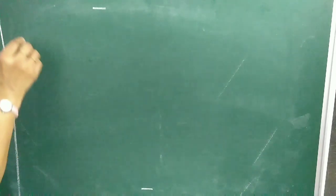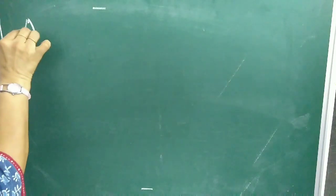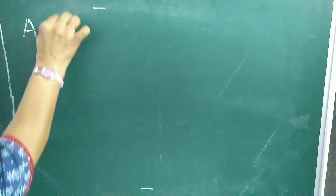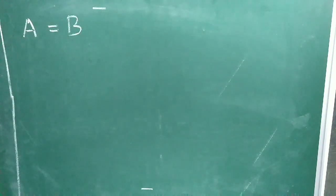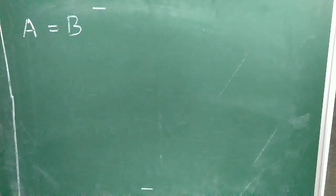My first video is about algebraic identities. Do you know what an identity is in maths? An identity is an equality relating one mathematical expression A to another mathematical expression B, such that A and B — which might contain some variables — produce the same value for all values of those variables.